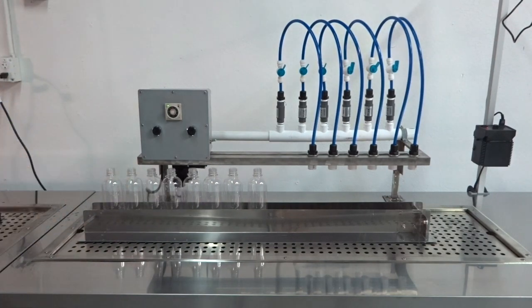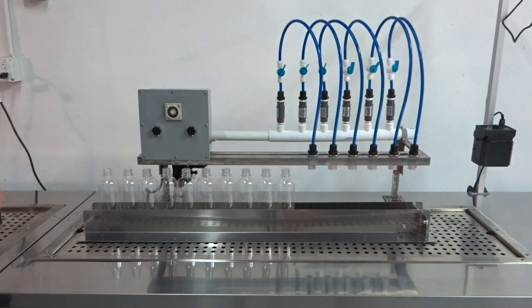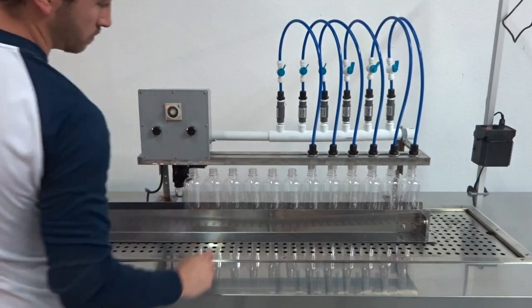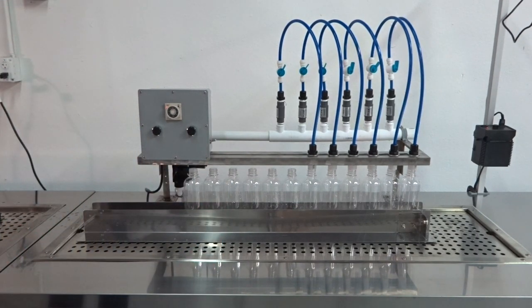The bottles are moved down the filling line and placed under the six filling nozzles. Since the EasyFill can fill bottles of different sizes and capacities, the filling line is adjustable for different heights and bottle widths.